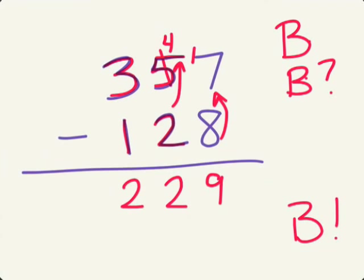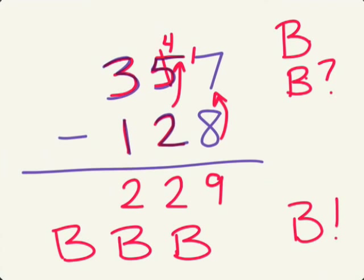So 357 minus 128 is 229. And you now know the BBB rule of subtraction with or without regrouping. Thank you. This is Mark Morgan signing off.